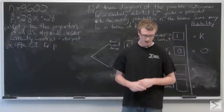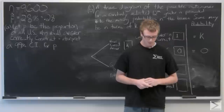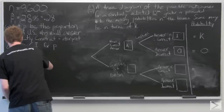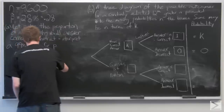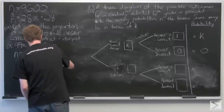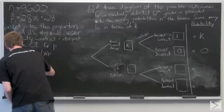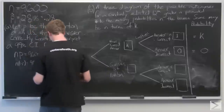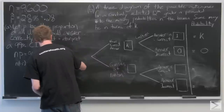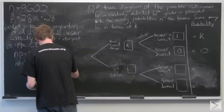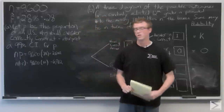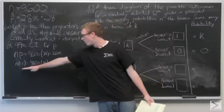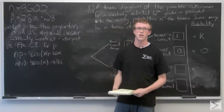We're given that the sample is random. To check that it's large enough, we need NP and N times (1 minus P) both to be greater than 10. NP is 9600 times 0.28, which equals 2688 — clearly larger than 10. And N times (1 minus P) is also clearly larger than 10. So our conditions are all met.